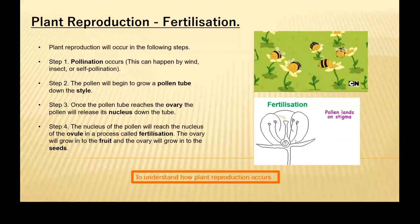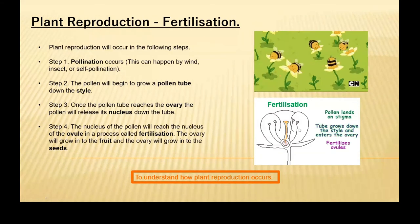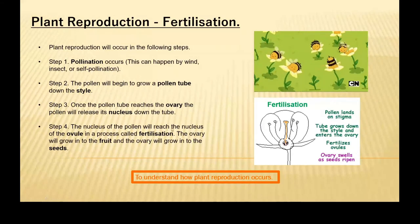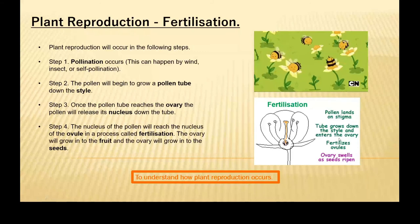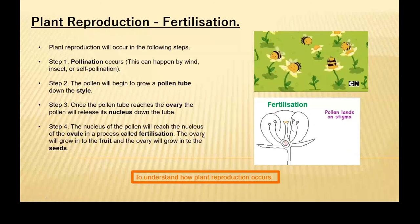So when you're eating a piece of fruit, you're eating a plant ovary, and the seeds are the ovules. So, let's just run through our steps. Step one: the pollen will land on the stigma. The tube will grow down the style and enters the ovary. Now, the nucleus of the pollen will fuse with the nucleus of the ovule. Then fertilization will occur.